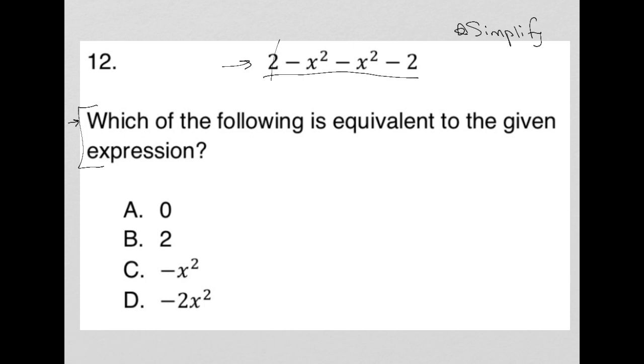So yeah, pretty much. 2 minus 2 is 0, negative x squared minus x squared. Well, that would be a negative 2x squared. So that's the simplified version of the expression provided for us.